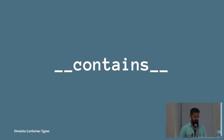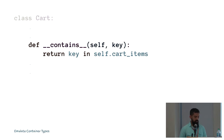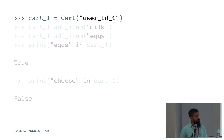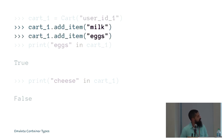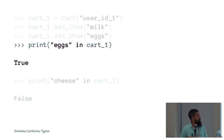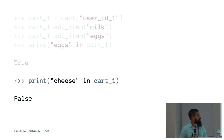If you want to implement membership checks, you implement dunder contains. This gets used in conjunction with an if statement. In this implementation I'm simply returning true if the key is in self.cart_items. Now I can create a new cart and add items into it. 'Eggs in cart_one' evaluates to true, while checking for an item I didn't add evaluates to false.